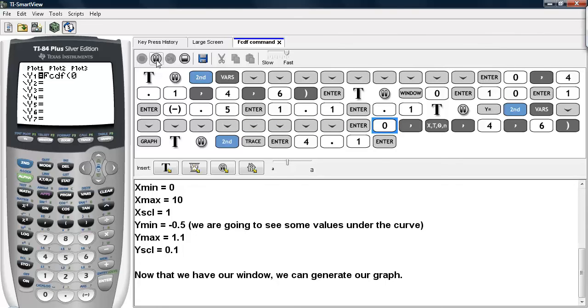And the lower bound is 0. The upper bound will be x. The numerator degrees of freedom are 4, and the denominator degrees of freedom are 6. We'll go ahead and graph this.